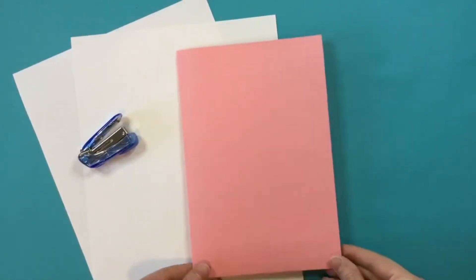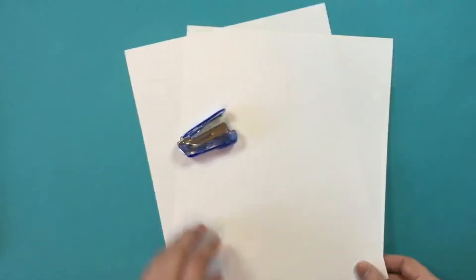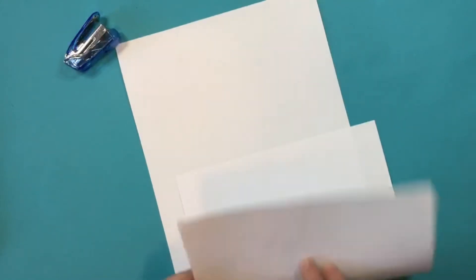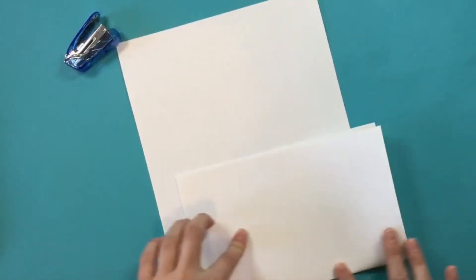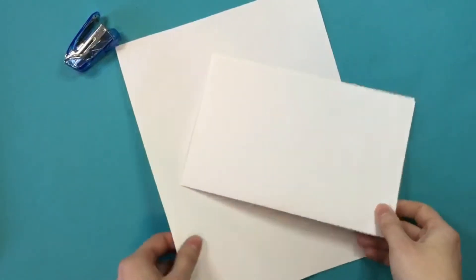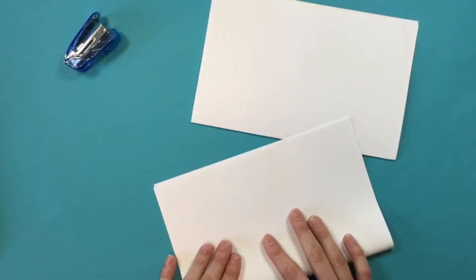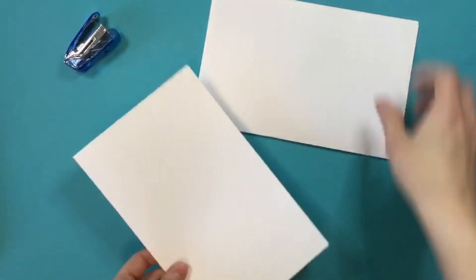Now, once you've got your cover page folded, then you're going to take your white pages, and we're going to go ahead and fold those in half as well. Now, I'm only folding two sheets of paper, but feel free to fold as many papers as you want for your sketchbook. You can make lots of sketchbooks that only have a few pages, or you could make one sketchbook that has a ton of pages. It is totally up to you.